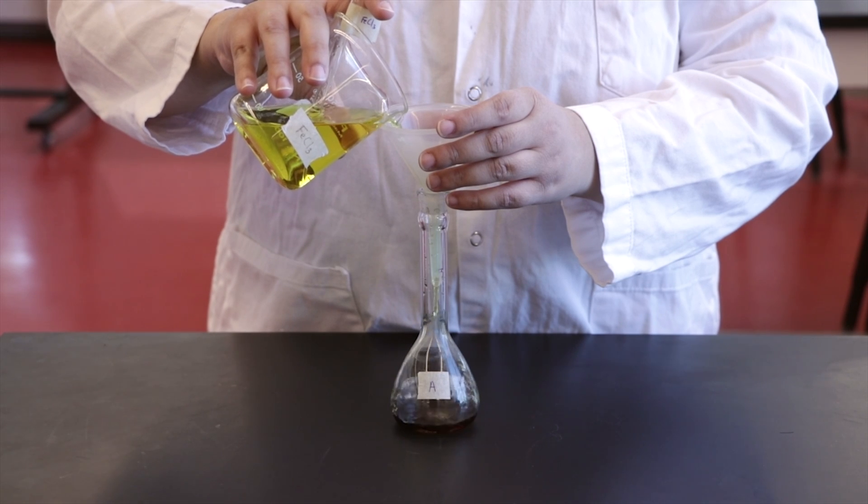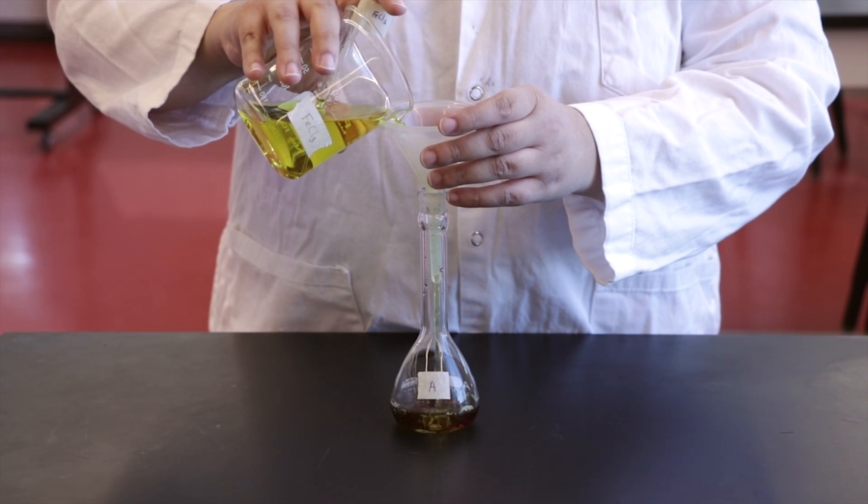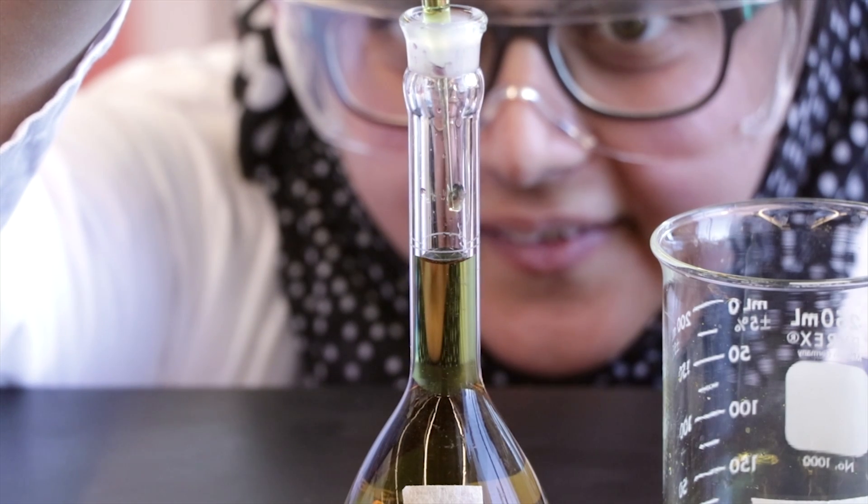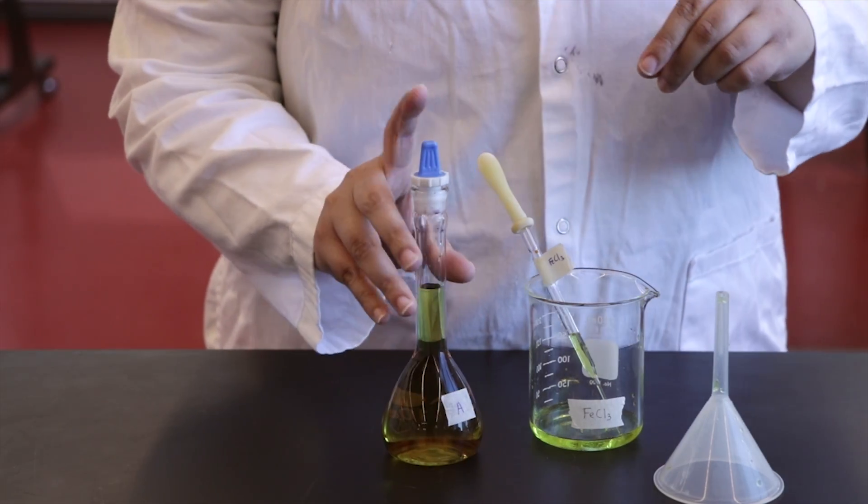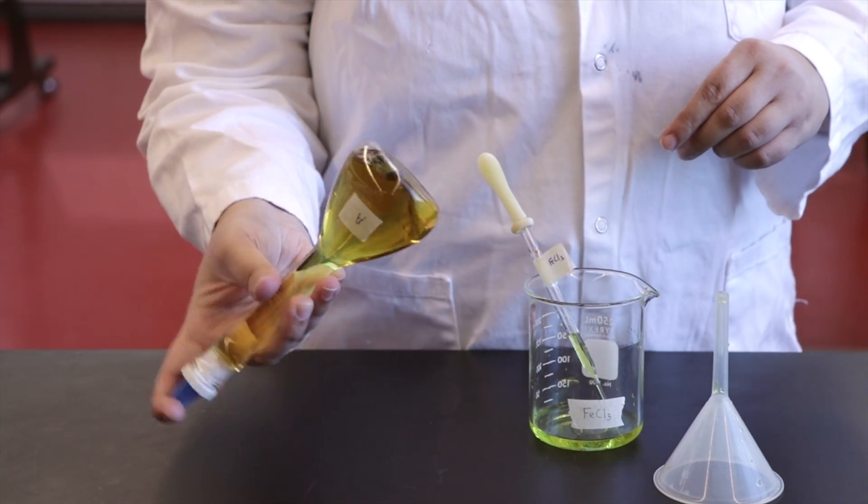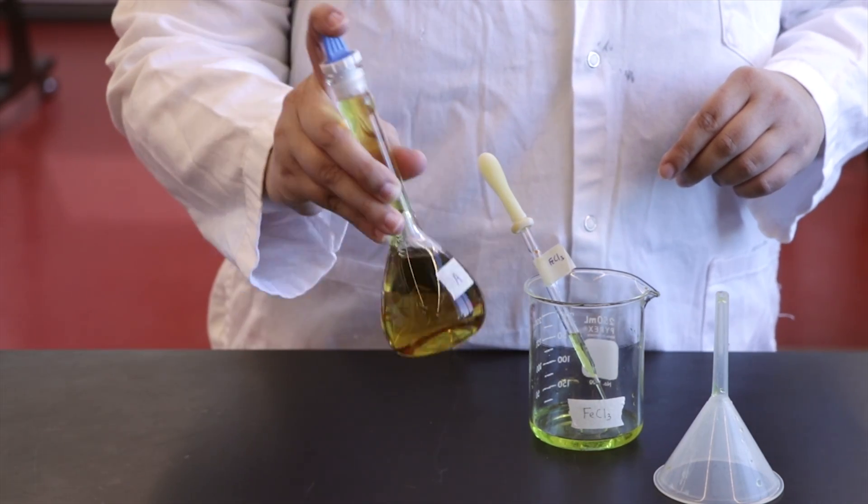Carefully fill each flask to the 100 mil mark with the acidified 0.02 molar iron chloride solution. Invert each solution 20 times and record the percent transmittance of each solution as soon as it is prepared.